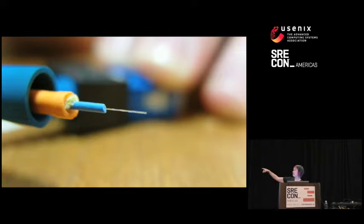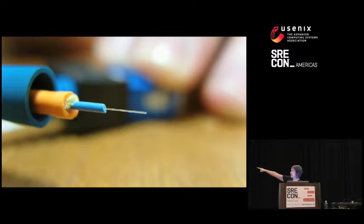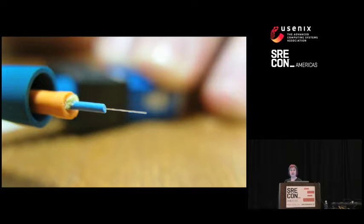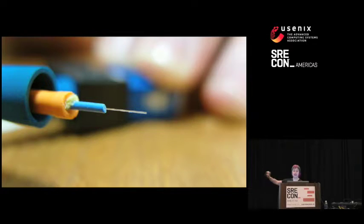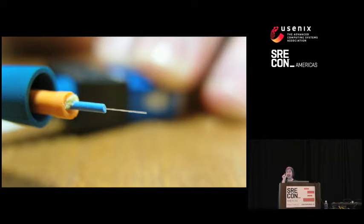Here is a very zoomed-in picture of a fiber optic cable. You see that tiny little piece of glass there in the middle? It's anywhere from 8 to 100 micrometers. And then you see there's a lot of protective jackets around it, because with such a tiny little piece of glass, these cables can be very fragile.